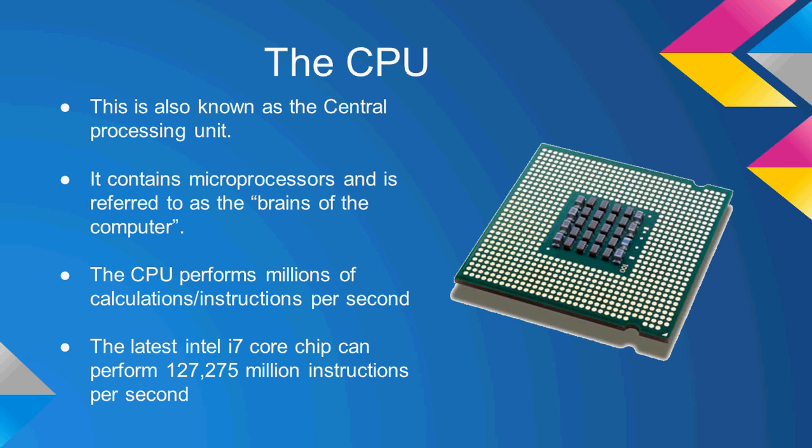The CPU contains microprocessors and is referred to as the brains of the computer. The CPU performs millions of instructions and calculations per second. For example, the latest Intel Core i7 chip can perform 127,275 million instructions per second.